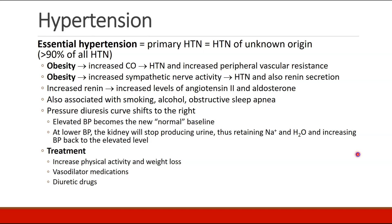Other factors associated with essential hypertension are smoking, alcohol consumption, and obstructive sleep apnea. In these patients, the pressure-diuresis curve shifts to the right, which means high blood pressure becomes their new normal baseline. And if blood pressure is lower than their new normal, the kidney stops producing urine in order to retain sodium and water and increase blood pressure back to this new elevated level.